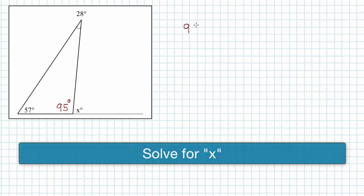So let's solve for X now. 95 plus the variable X equals 180 degrees, which is the straight line.